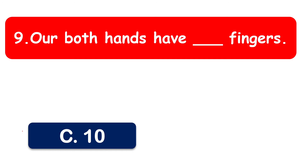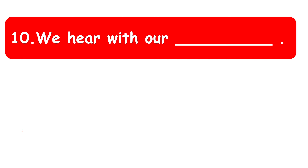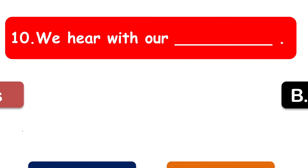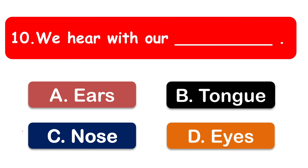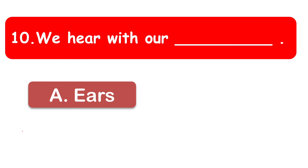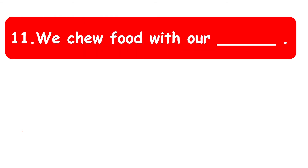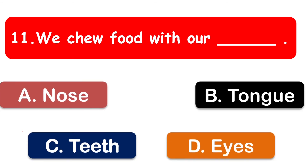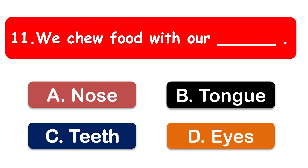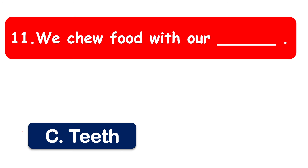We hear with our dash. The options are ears, tongue, nose, and eyes. The correct option is ears — we hear with our ears. Teeth help us to chew our food.